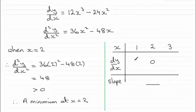If I have x equals one and I substitute it into here, I'm going to end up with 12 minus 24, which is going to be negative value. Negative 12. I'll just put negative there.